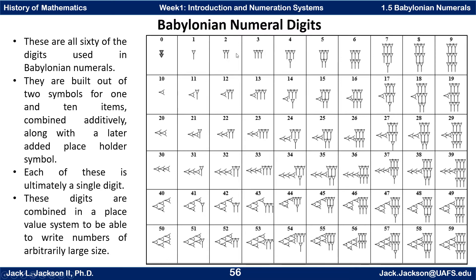Put 2 of the 1s together and you get a 2; 3 gives you a 3; 4 could be arranged like this — 4 units, then 5, 6, 7, 8, 9, then 10 looks like this. 11 would be a 10 and a 1; 12 would be a 10 and two 1s, and so forth. These arrangements could possibly be ordered differently and still mean the same thing, but this is at least one way they were commonly arranged. Ultimately, each one of these combinations becomes a single digit, and these digits are combined in a place-value system to write numbers of any arbitrarily large size.